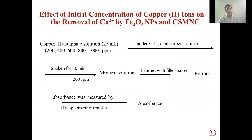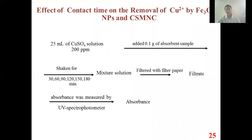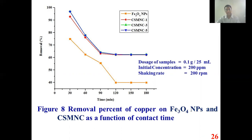Another application is cobalt removal. This diagram and flow sheet show the effect of initial concentration of cobalt ion on the removal by Fe3O4 nanoparticles and CS-MNC. The figure shows removal percent of cobalt on Fe3O4 nanoparticles and CS-MNC as a function of initial concentration of cobalt sulfate. It indicates that the initial cobalt ion concentration of CS-MNC was more effective than Fe3O4. A high percentage removal was observed at low concentration of cobalt ion. CS-MNC absorbed more cobalt than Fe3O4 over the investigation time period.